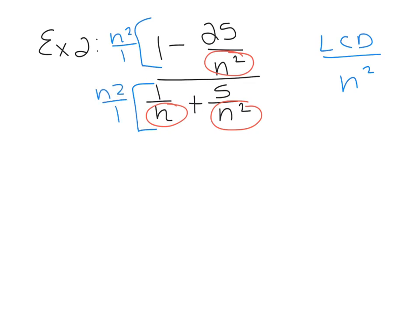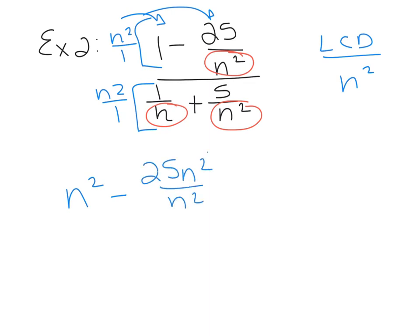Distributing in the numerator: N squared over 1 times 1 gives N squared, since anything times 1 is itself. Then minus — multiplying times 25/N squared, top times top over bottom times bottom, gives 25N squared over N squared. Those N squareds cancel, so the numerator turns out to be N squared minus 25.